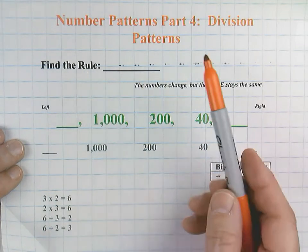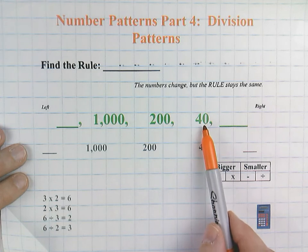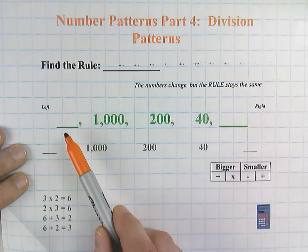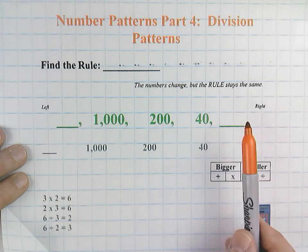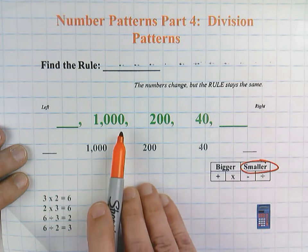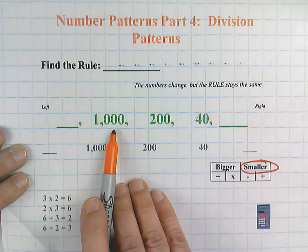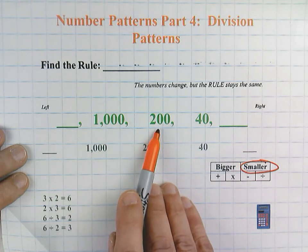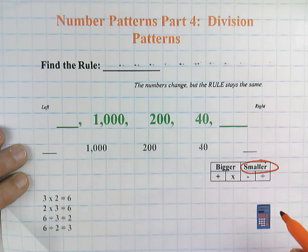Find the rule. 1,000, 200, 40. And I see this time we have a blank here on the left and the right that we will need to solve. Numbers are definitely getting smaller. And yes, it could be subtraction, but it's not going to be because 1,000 minus 200 would be 800, just using mental math, and you're not going to be able to take 800 from 200. So this is a division rule.